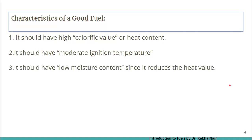It should have low moisture content because it reduces the heat value. It takes away an appreciable amount of liberated heat in the form of latent heat of vaporization and increases the transport cost. Surface moisture causes difficulty in handling the solid fuel. Presence of 5–10% moisture is desirable because it produces a uniform fuel bed and also less amount of fly ash.